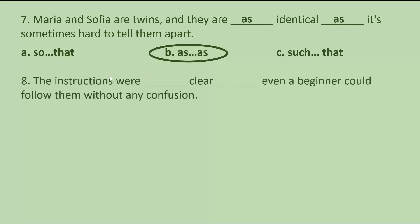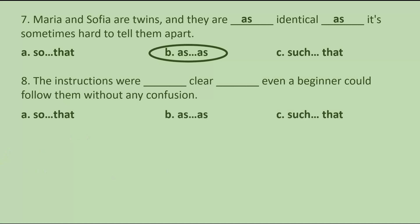Number 8. The instructions were blank clear, blank even a beginner could follow them without any confusion. A. So...that. B. As...as. C. Such...that.